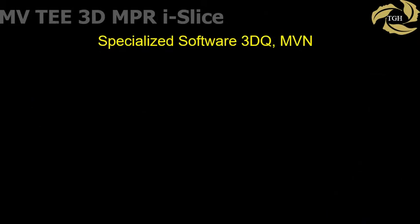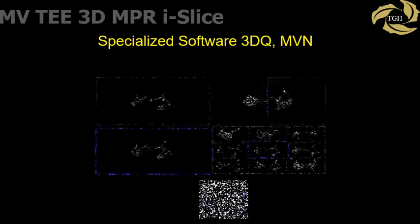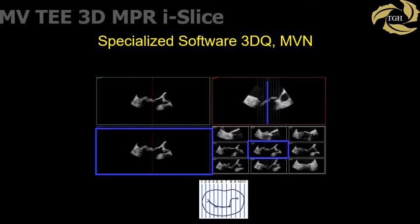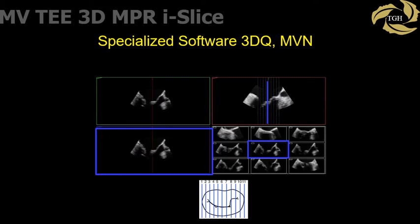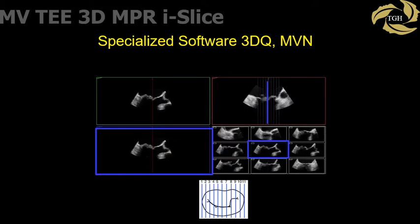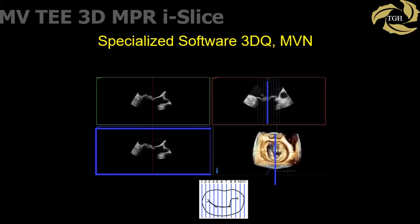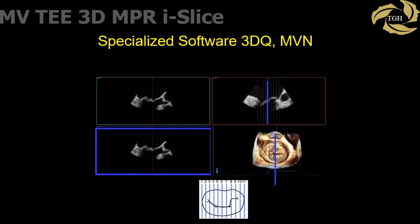Another option using specialized software permits aligning predefined cuts perpendicular through the mitral valve, similar to CT scan cuts. This results in a display of multiple sagittal cuts through the mitral valve, each of which can be examined for pathology. Using iSlice, the on-face 3D dataset can be displayed on screen to localize individual segments. Remember, the pathology is identified using these 2D cuts extracted from the 3D dataset.